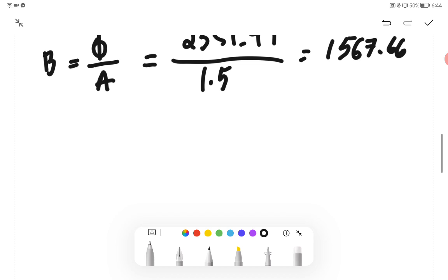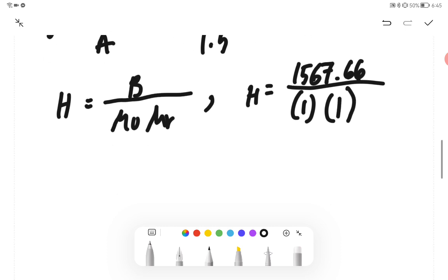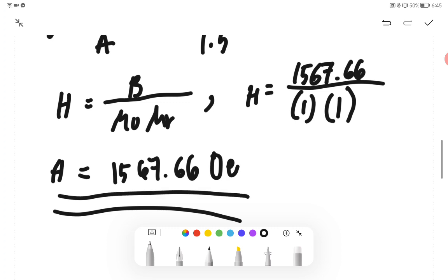Okay, so we're finding for H. The H equals B all over μ₀. Therefore, we have H equals 1567.66 all over μ₀ which is 1, and then our μr is 1. So overall, H equals 1567.66 Oersted, or simply Oe. So this would be the final answer.